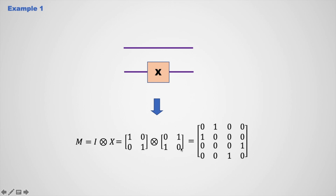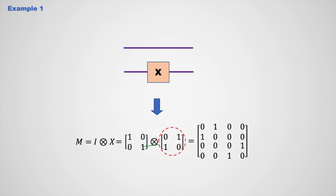To calculate the tensor product between these two matrices, the entire X matrix is multiplied with each element of the identity matrix. Here, this entire matrix multiplied by the first element 1 gives this block. Now, this matrix multiplied with 0 gives this block. And this matrix also multiplied with 0 gives this block.